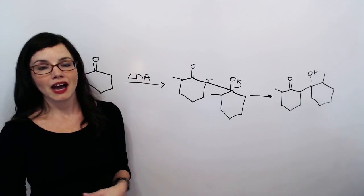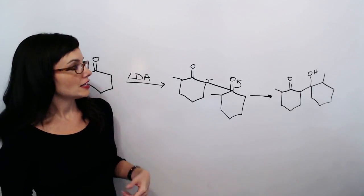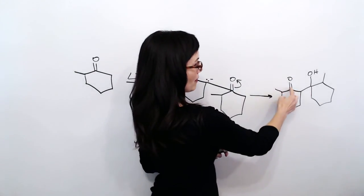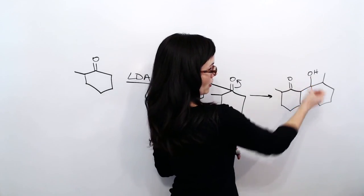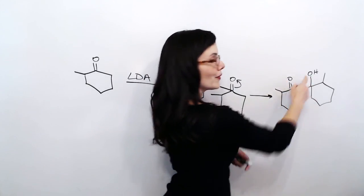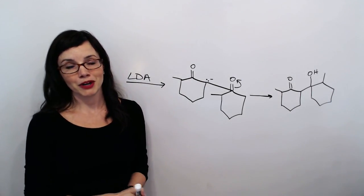And, again, whenever we have an aldol product, we can always double-check ourselves and see, do we have the same number of carbons before and after? And, most importantly, do we have a carbonyl and an alcohol? And can we go, oh, one, two, three, oh. So, that's a pretty good indicator that we've done a good job putting our molecules together.